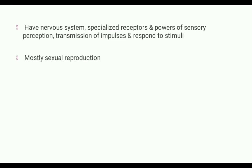Most animals reproduce sexually, and sexual reproduction involves fertilization and embryonic development. Haploid male gametes and haploid female gametes fuse to form a diploid zygote. After fertilization, the zygote undergoes development through cleavage, blastulation, gastrulation, and embryonic development.